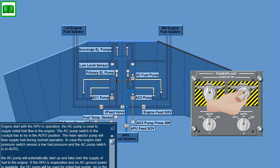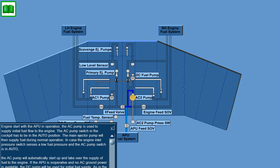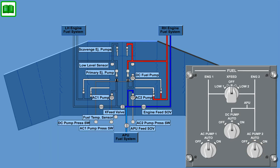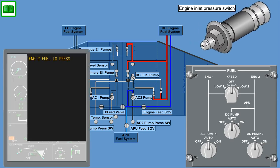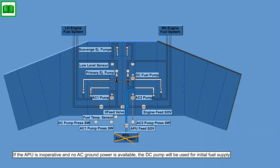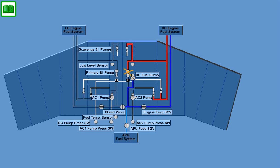For engine start with the APU in operation, the AC pump is used to supply initial fuel flow to the engine, with the AC pump switch in the cockpit in the auto position. The main ejector pump will then supply fuel during normal operation. If the engine inlet pressure switch senses a low fuel pressure and the AC pump switch is in auto, the AC pump will automatically start up and take over the fuel supply. If the APU is inoperative and no AC ground power is available, the DC pump will be used for initial fuel supply, and will also supply fuel in the case of a main ejector pump and AC pump failure.